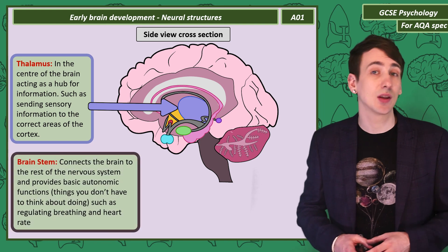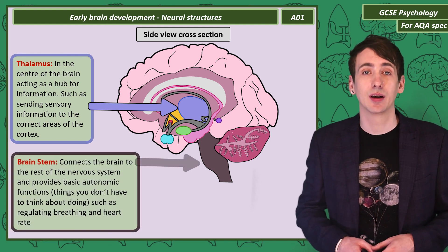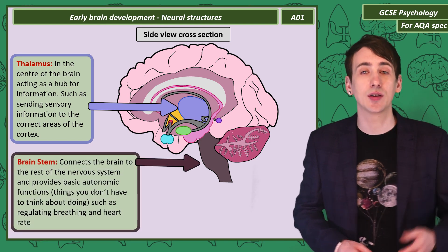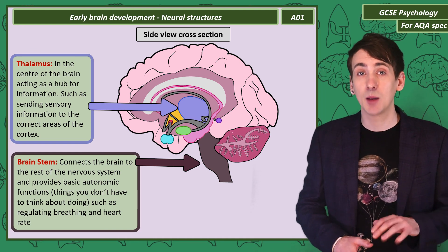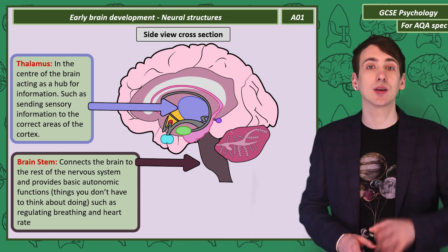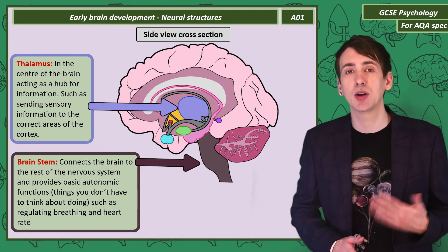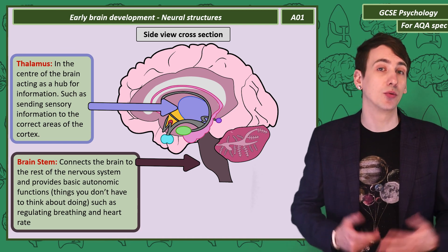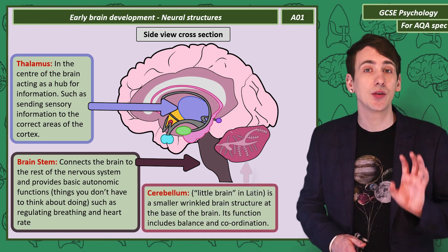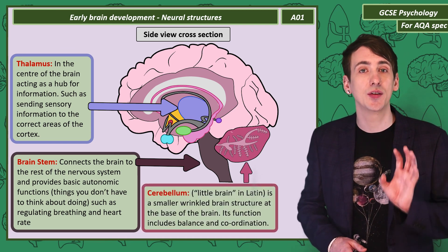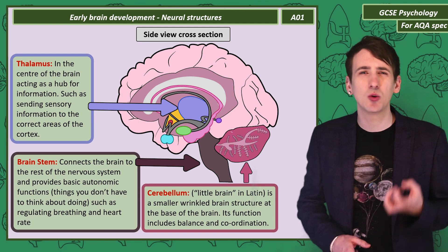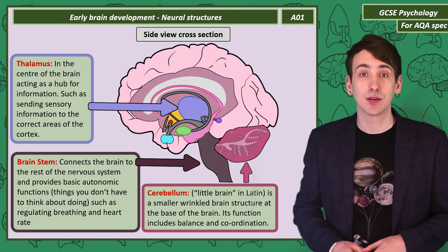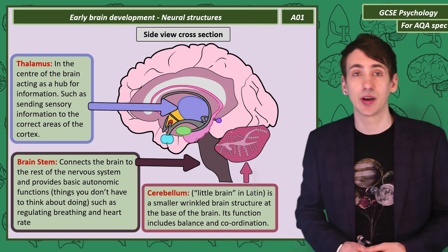The brain stem is at the bottom of the brain and connects the brain to the spinal cord and onto the rest of the body's nervous system. It provides basic autonomic functions like keeping your heart beating and regulating your breathing rate. Under the cerebrum there's a structure called the cerebellum — a small, wrinkled structure involved in balance and coordination.